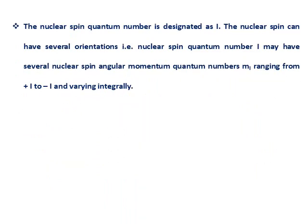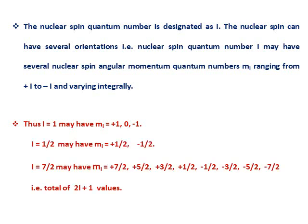The nuclear spin quantum number is designated as I. The nuclear spin can have several orientations — that is, the nuclear spin angular momentum quantum number MI may range from +I to −I. If I=1, then MI = +1, 0, −1. If I=1/2, then MI = +1/2 and −1/2. If I=7/2, then MI ranges from +7/2 to −7/2, giving a total of 2I+1 values. Hyperfine splitting gives 2I+1 ESR lines.